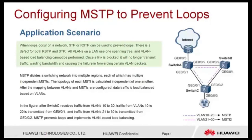When loops occur on a network, STP or RSTP can be used to prevent them. However, there is a defect for both RSTP and STP: all VLANs on a LAN use one spanning tree, and VLAN-based load balancing cannot be performed. Once a link is blocked, it will no longer transmit traffic, wasting bandwidth and causing failure in forwarding certain VLAN packets.